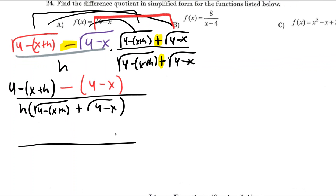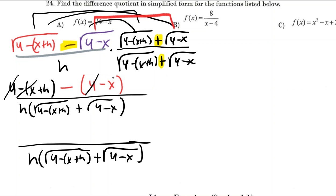The last thing that we can do is combine some like terms in the numerator and then we will be finished. So I've got a four and then when I distribute this, minus four, so those go to zero. I've got a negative x, and if I distribute this I've got a plus x, so those are going to cancel. And I'm left with an h.